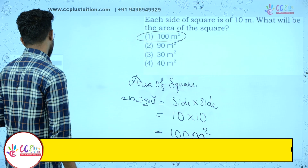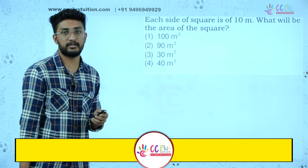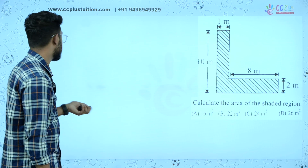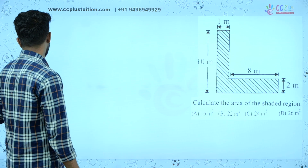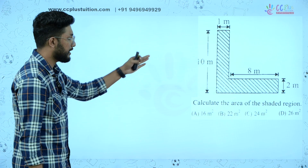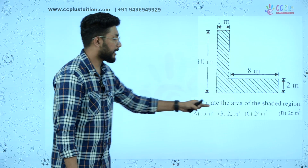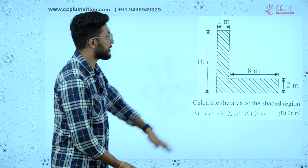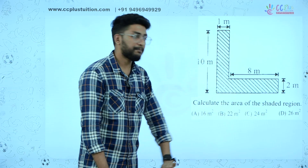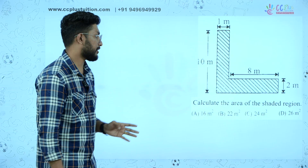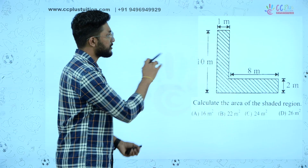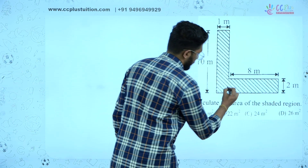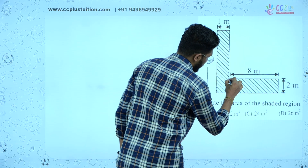Now let's take a look at the more complicated question. Calculate the area of the shaded region. We divide the figure here into rectangle 1 and rectangle 2.